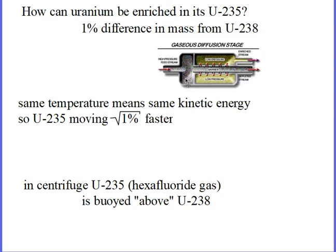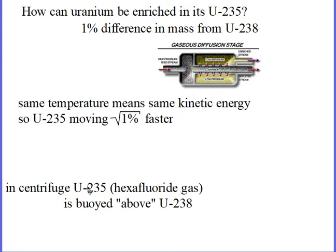Then I will take that gas and diffuse it. The one that is moving faster will diffuse slightly faster — it will move through this pipe slightly faster. And after literally miles of going through these pipes, the gas that comes out the other end will be slightly enriched in the 235. And that is the way that enrichment was done to build the American atomic bomb at Oak Ridge in the Manhattan Project.